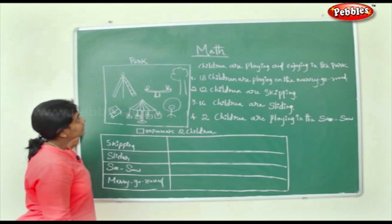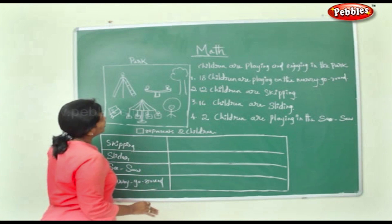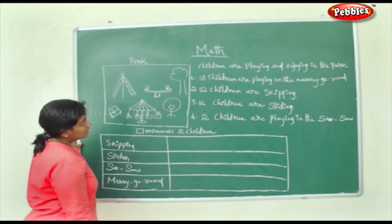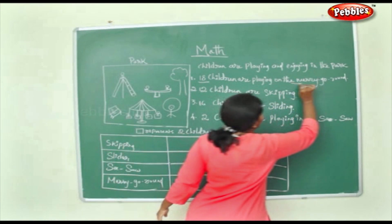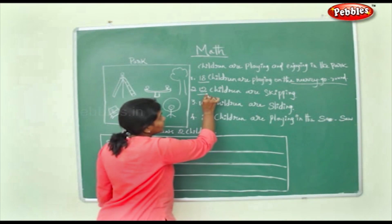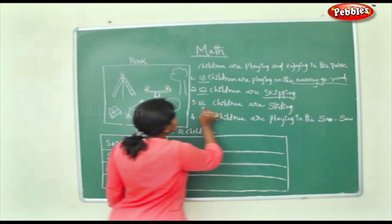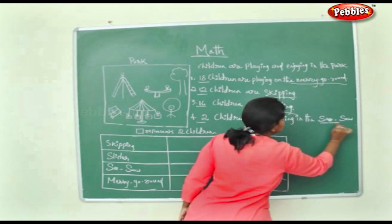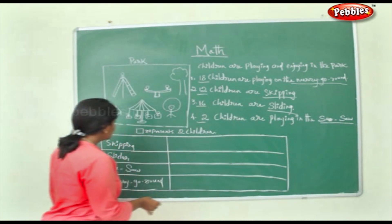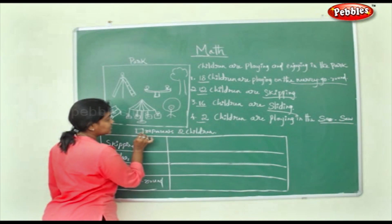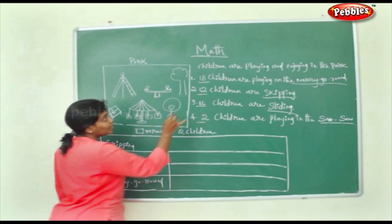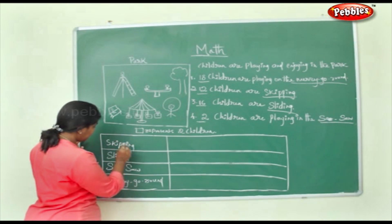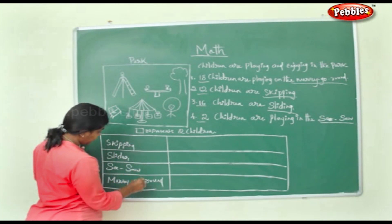Now see children — this is a park. Children are playing and enjoying in the park. 18 children are playing on the merry-go-round, 12 children are skipping, 16 are sliding, and 2 are playing on the seesaw. Each box here represents 2 children. Now let's draw a pictograph for skipping, sliding, seesaw, and merry-go-round.